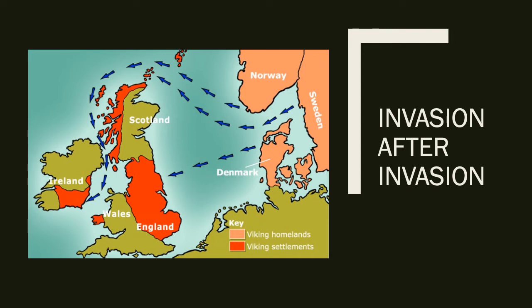As an island state, nothing stayed quiet for long. Sure enough, invasion after invasion — the next one came along. This time from the countries in the peach colour in the top right of the map: Norway, Sweden and Denmark. This group of invaders were called the Vikings.